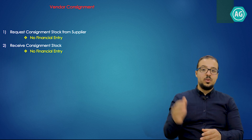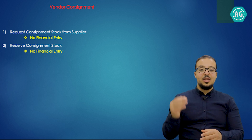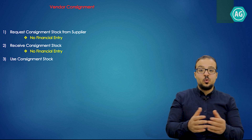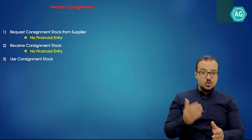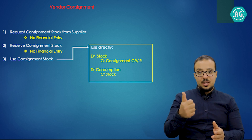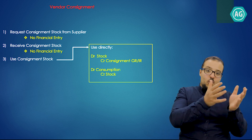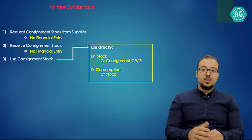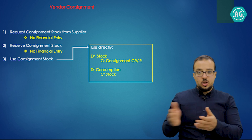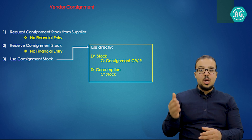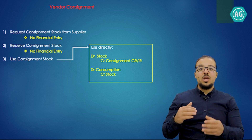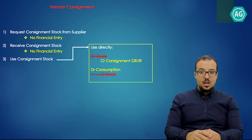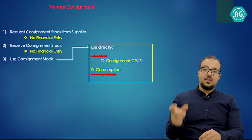The third step is to post a goods issue when we use the raw material — for production, a cost center, or any reason. When we post the goods issue, we must post two financial entries: first, a debit to stock and credit to a GR/IR account to transfer ownership from the supplier to us; second, a debit to a consumption account and credit to the stock account for the actual consumption. Since the stock debit and credit cancel each other, the remaining entries are the GR/IR account and the consumption account.